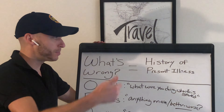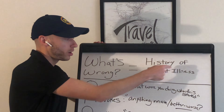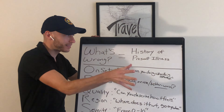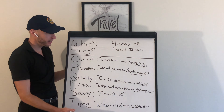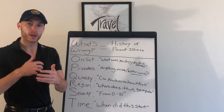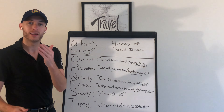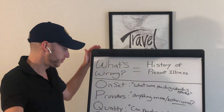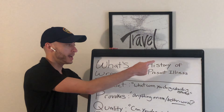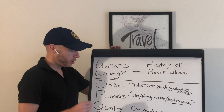OPQRST is a mnemonic — a way for you to learn different things in medicine more easily, so you can recall them on a test or out in the field with a patient. OPQRST is a mnemonic to remember the HPI, the history of the present illness. We start with O — O is for onset.